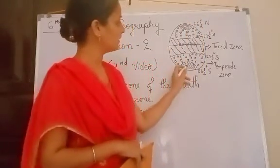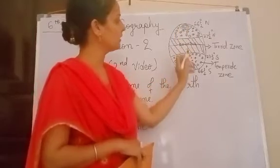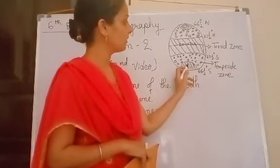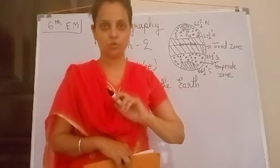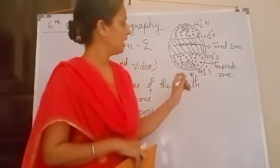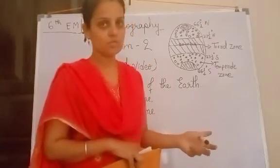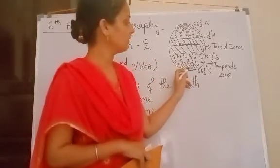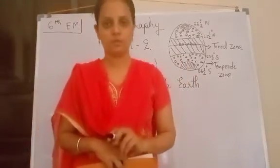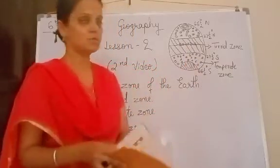But temperature doesn't get the chance to become high. Here mostly temperature remains low. That's why here you see more ice, glaciers etc. And they are not melting so easily, because here temperature doesn't become high. Understood?